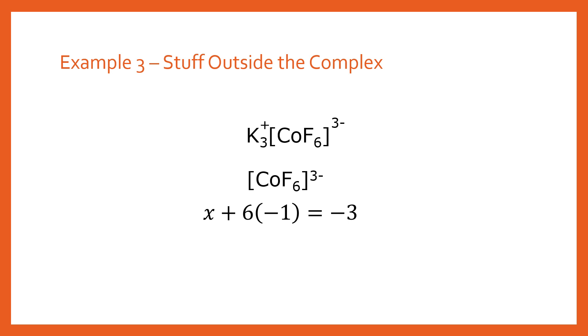So x is going to be our cobalt. Then we've got fluorine. Just like chlorine it's also minus one. So we get six times minus one is minus three. And so obviously we can simplify that down to x minus six is minus three. And then with some really simple algebra, just adding six to both sides, we end up with the cobalt being in the three plus oxidation state. And so that's how you deal with some stuff outside of your complex.